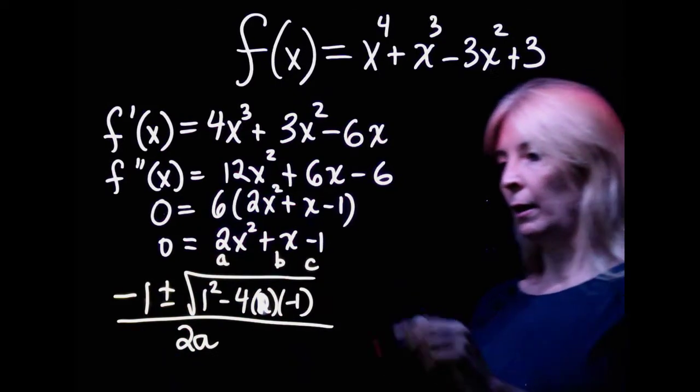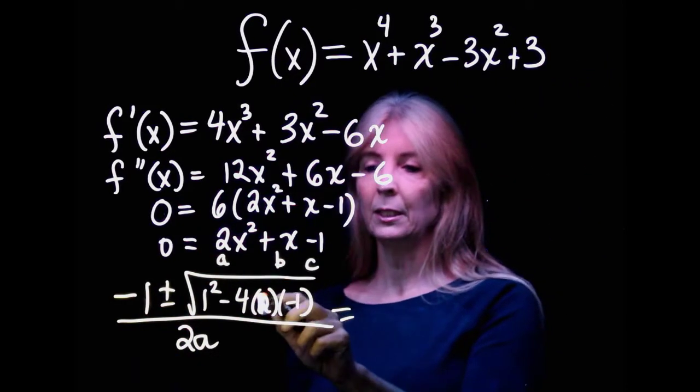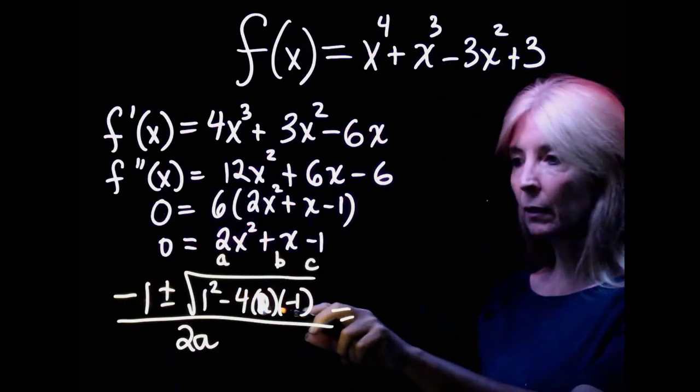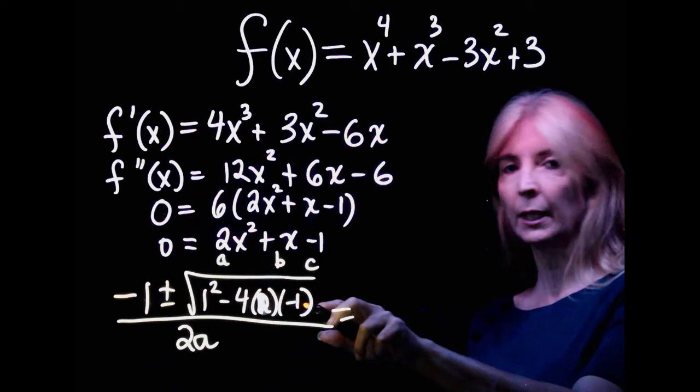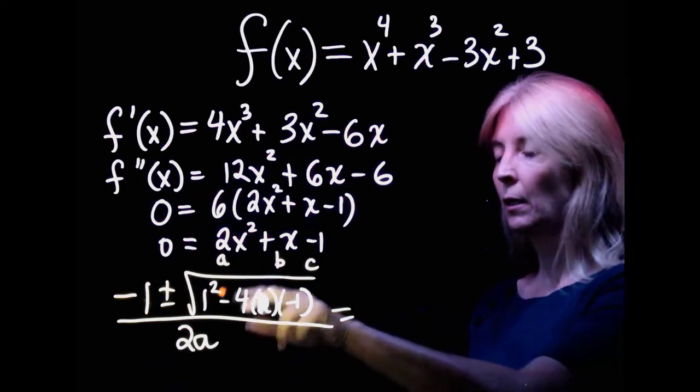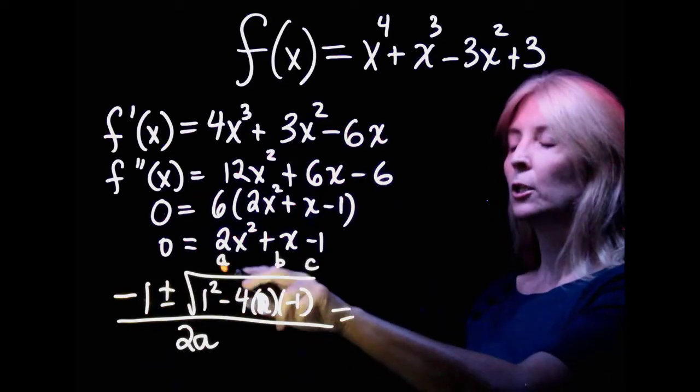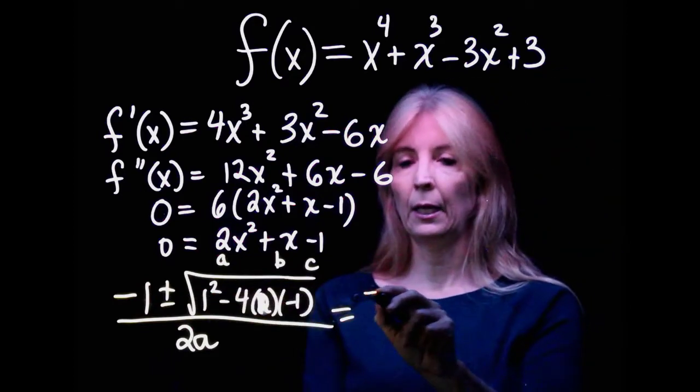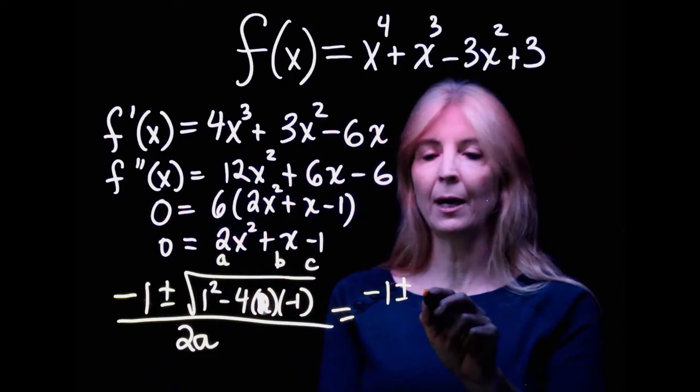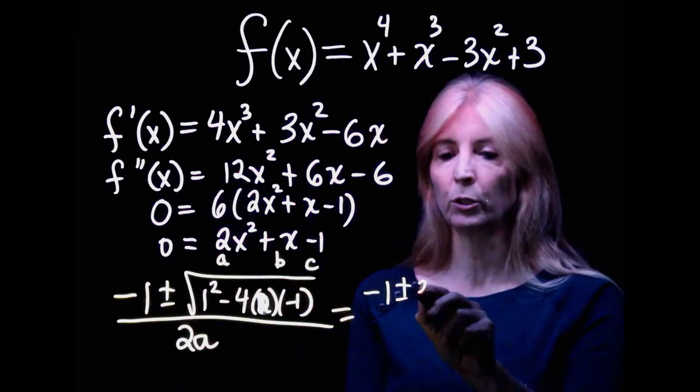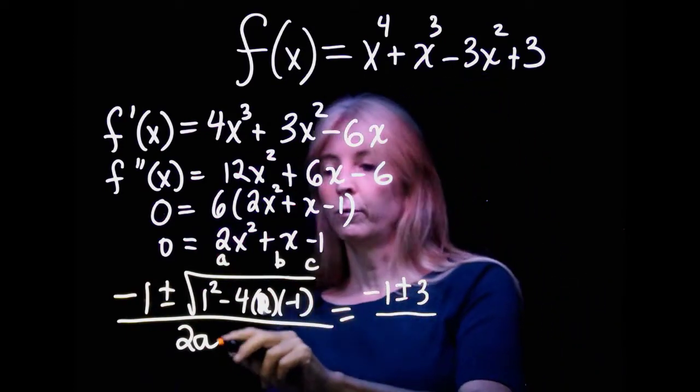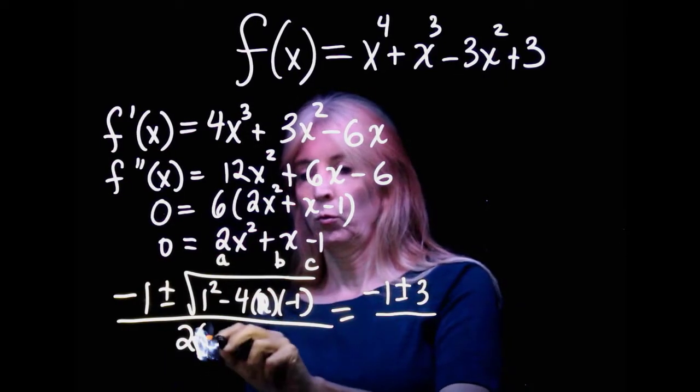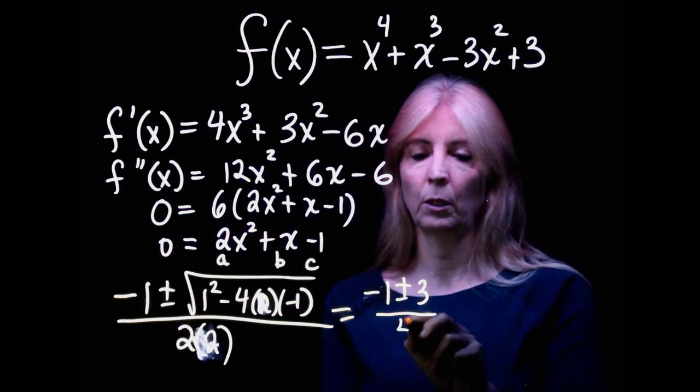So quadratic formula minus b plus or minus the square root of b squared minus 4ac all divided by 2a. Alright, so in the parentheses, this is going to be negative 4 times negative 2, negative 8, negative 8 times negative 1, positive 8 plus 1, 9 square root 3.